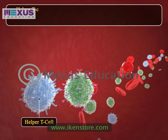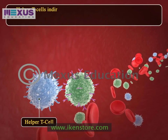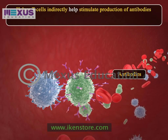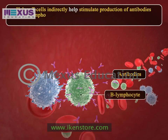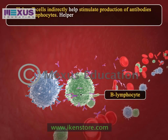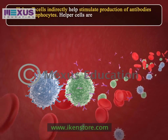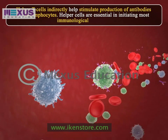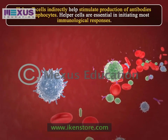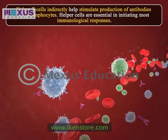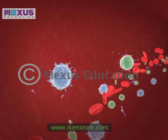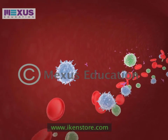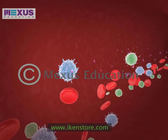Helper T cells indirectly help stimulate the production of antibodies by B lymphocytes. Helper cells are essential in initiating most immunological responses and exert their influence by a variety of highly specific regulatory factors.